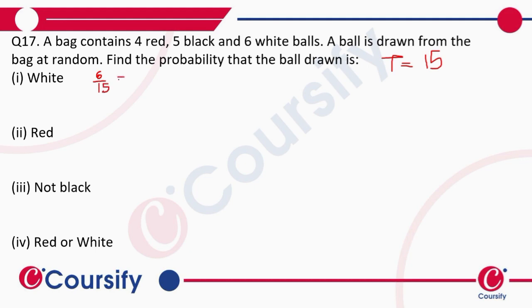...can also be written as 2/5. Next, we have the probability of it being a red ball. The total number of red balls is 4, and the total number of balls altogether is 15.